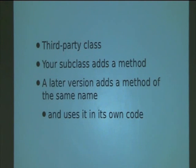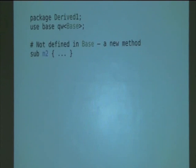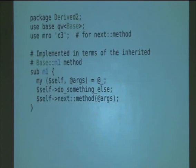So, let's look at the various cases. So, the simplest thing is defining a method in a class with no superclasses. So, a package base, sub m1, plain old method, of course that's fine. Similarly, if you have a derived class, and you add a new method in that derived class, that's also fine. So, derived one, use base base, sub m2, if it's not defined in base, it's a new method, that's fine. It's also, of course, fine to write a derived class method which knows about the base class version, that clearly can't be accidental. So, derived two inherits from base, it's going to use MRO::C3 so we can get the next method, and say that this sub m1 does something else first and then it moves on to what would have been done originally. It's clearly not accidental.